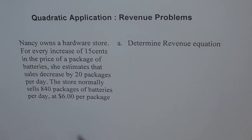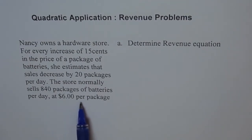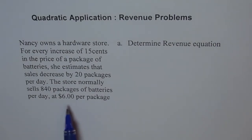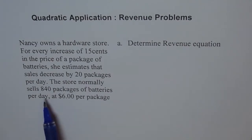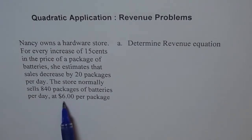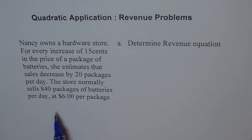For every increase of 15 cents in the price of a package of batteries, she estimates that sales decrease by 20 packages per day. The store normally sells 840 packages of batteries per day at $1.06 per package. Revenue is the money you get when you sell anything — it is the number of pieces sold times the cost of each piece.